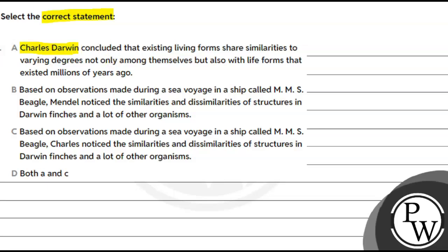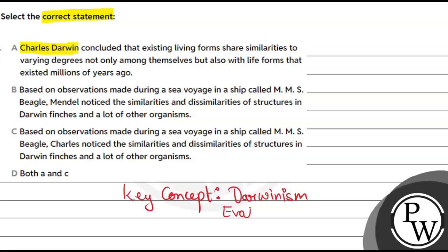Let's understand the key concept over here. Our key concept will be Darwinism. Now, Darwinism and the theory of evolution by Darwin included many points. Charles Darwin was the person who first described about evolution. He talked about how evolution works and gave several theories.